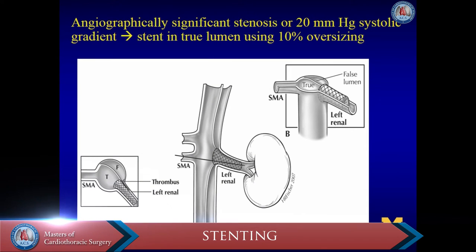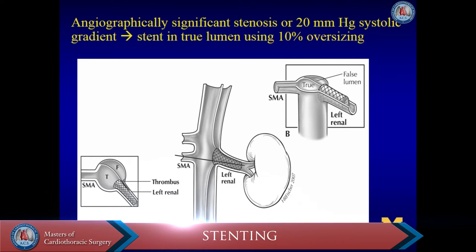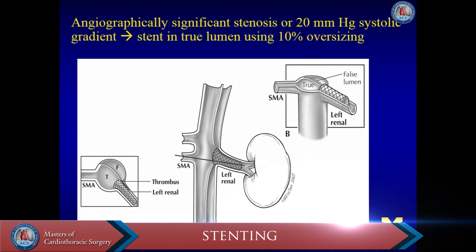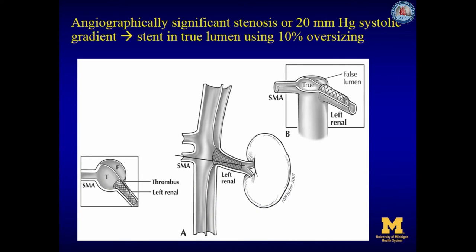In the event of angiographically significant stenosis or a measurement of a 20 mmHg systolic gradient, the renal true lumen is stented with a self-expanding stent with 10% oversizing. Completion manometry demonstrates branch vessel patency and adequate antegrade branch vessel flow. It is of major importance to look at these branches after you have covered the tear — you have to verify that these branches are perfused before you conclude the case.